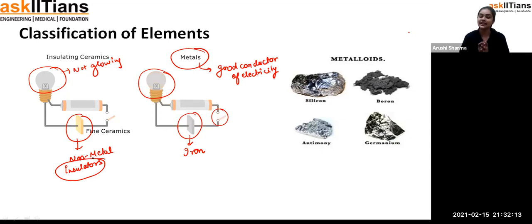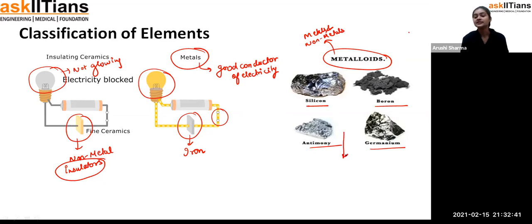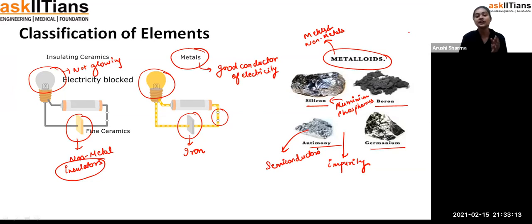The third category of elements is metalloids. Metalloids are those which have some properties of metals and some properties of non-metals — a mixture of both. Examples include silicon, boron, antimony, and germanium. When you add some impurity into them — for example, adding aluminium or phosphorus into silicon — because of this impurity addition they start behaving as conductors, but not completely. We call them semi-conductors.